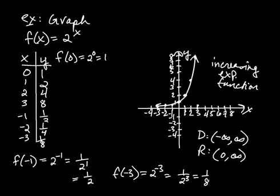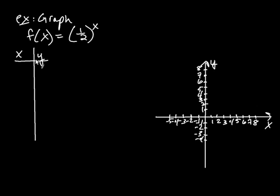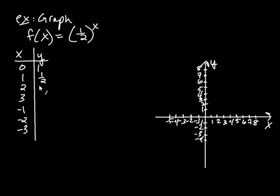Now increasing exponential functions aren't the only type — let's see another variety. Let's graph f(x) = (1/2) to the x. Once again it's an exponential function because the variable is in the exponent. Let's create a table of values with x = 0, 1, 2, 3, negative 1, negative 2, and negative 3. When you plug in 0, you get 1, because (1/2) to the 0 is 1. When you plug in 1, (1/2) to the first is 1 half. When you plug in 2, (1/2) squared is 1 fourth. When you plug in 3, you get 1 eighth.